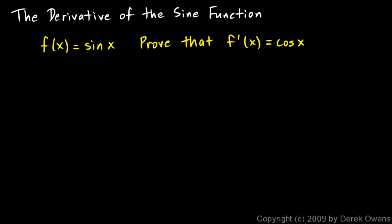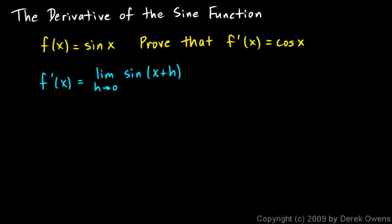Now we're ready to see how to differentiate the sine function. Given that f(x) = sin(x), we want to prove that the derivative of f is the cosine function. We tackle this with the definition of a derivative: f′(x) = the limit as h approaches 0 of [sin(x + h) − sin(x)] / h.